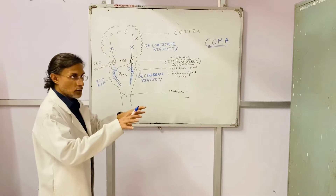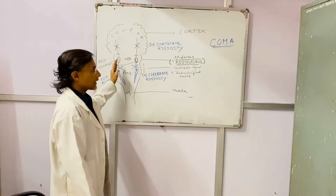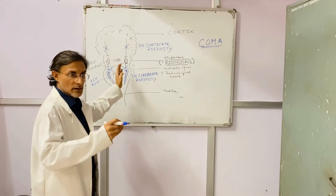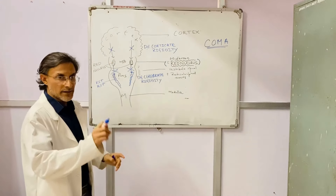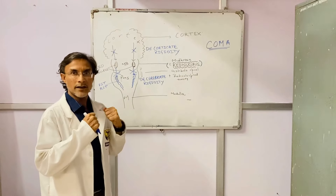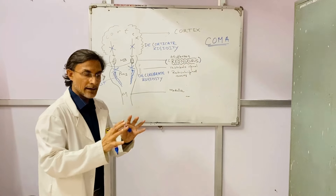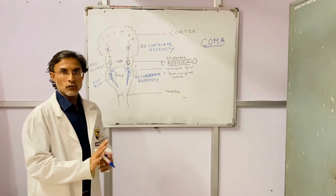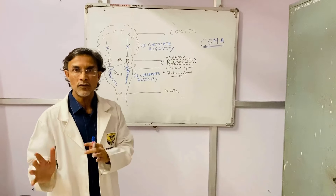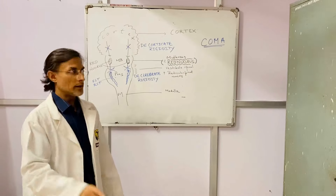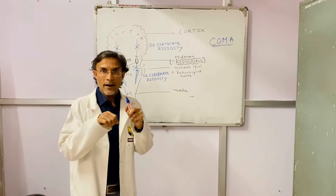Normally the cortex controls the red nucleus. If cortical control is removed, the red nucleus, when reinforced, will cause flexion of the upper limbs. The vestibulospinal and reticulospinal tracts, if not inhibited, will cause extension of all four limbs. The red nucleus only causes flexion of the upper extremity — it has no power over the lower extremity.